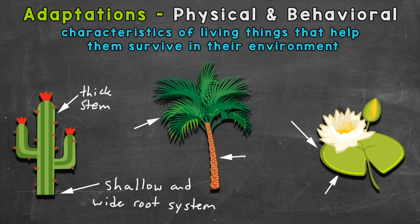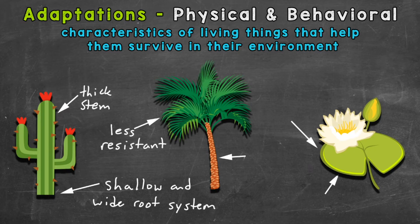Now let's take a look at the palm tree in the middle of your screen. Just like the desert cacti, there are many different types of palm trees, so here are some common adaptations, but they don't necessarily apply to all types of palm trees. We'll take a look at the leaves first. The leaves are shaped in a way that wind and rain can pass through them easily. One advantage of this is there's less resistance during a tropical storm, so a palm tree can survive the wrath of a tropical storm.